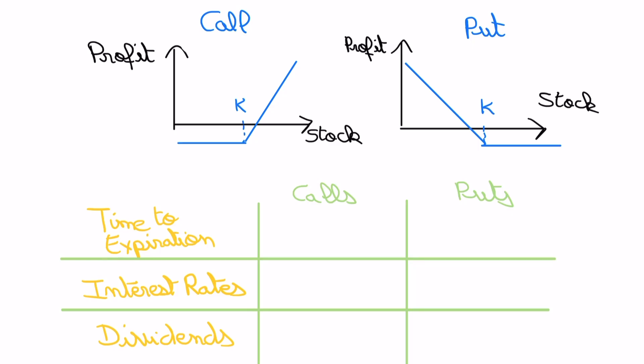In the last video we saw how the stock price, the strike, and the volatility affects the call and the put prices. Now we're going to look at the time to expiration, the interest rate, and the dividends.